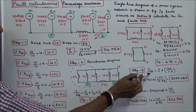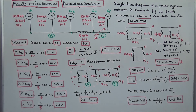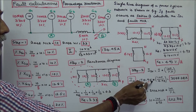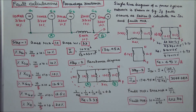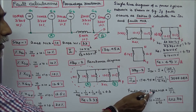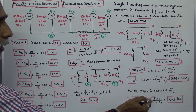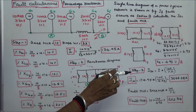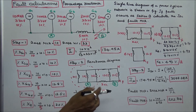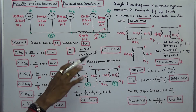Step 3: Calculate the short circuit current. The formula is I_sc = I × 100 / percentage X. I_sc = 174.95 × 100 / 4.93 = 3548.68 amps. Fault MVA equals base MVA × 100 / percentage X = 10 × 100 / 4.93 = 202.84 MVA. Therefore, short circuit current is 3548.68 amps and fault MVA is 202.84. Thanks for listening.